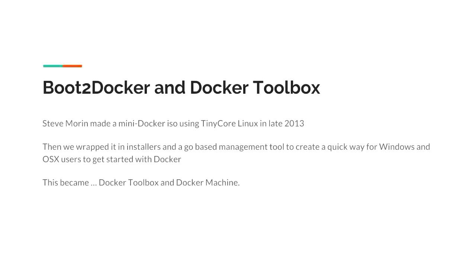Starting with boot to Docker and Docker Toolbox: Steve Marin made a micro Linux out of Tiny Core. Tiny Core is already microscopic — these days it's about 15 meg as an ISO, back then it was around 42 meg. Adding Docker to it pretty much blows it out to the original size. We then started wrapping it in tools so that you could run boot2docker start and it would create a virtual machine on your box, whether VirtualBox, QEMU, and so on. That eventually became Docker Machine and Docker Toolbox.